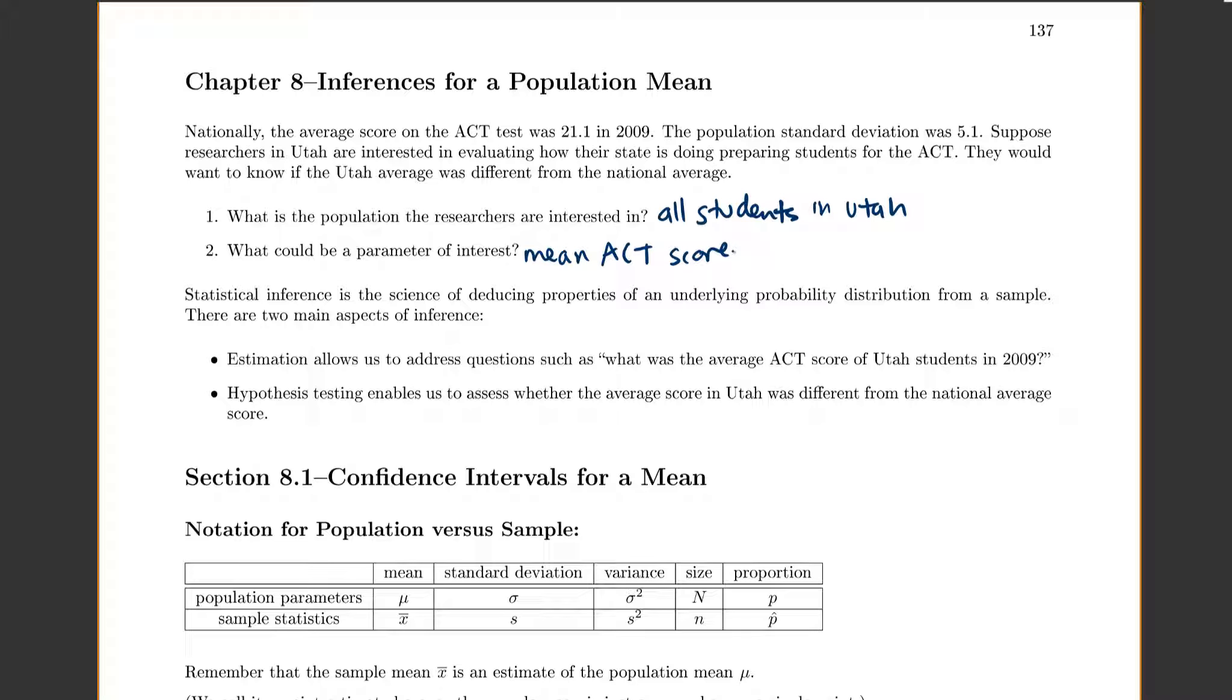So statistical inference is the science of deducing properties of an underlying probability distribution. Now when we say underlying probability distribution, that's just our textbook's way of saying the population. So we want to figure out properties of the population from looking at our sample.